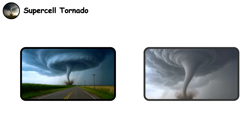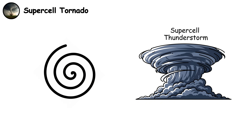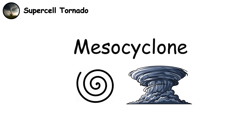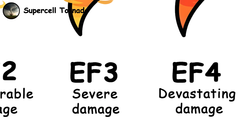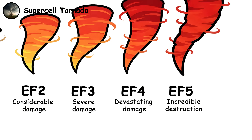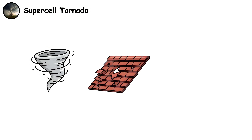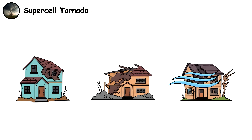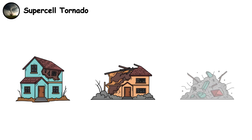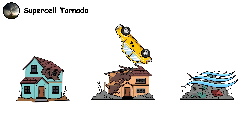These monsters form from supercell thunderstorms, which are rotating storms with a persistent updraft called a mesocyclone. Supercell tornadoes range from level 0 to 5 on the Enhanced Fujita Scale. An EF0 might damage roof shingles and break tree branches, while an EF5 creates absolute devastation with winds exceeding 200 miles per hour, flattening well-built homes to foundations and throwing cars hundreds of yards like toys.